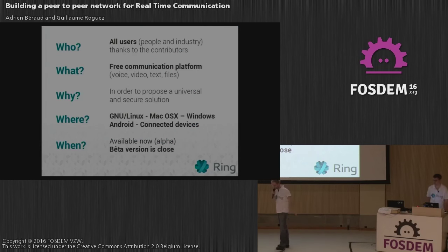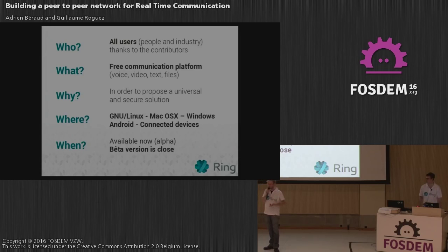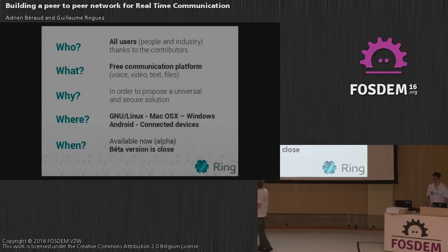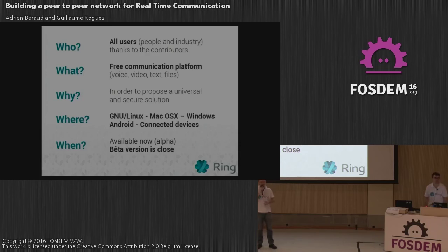To summarize what Ring is: it's for all kinds of users. It's a free communication system — all the code is GPL, mirrored on GitHub, using Gerrit to manage bugs. We aim to produce a universal, secure solution available on all major platforms: Linux, Mac OS X, Windows, Android, and recently embedded devices. It's publicly available now at ring.cx, and a better version is very close to being published.